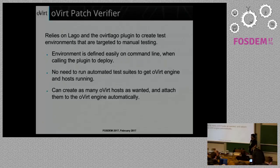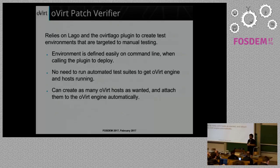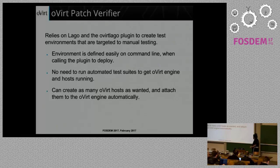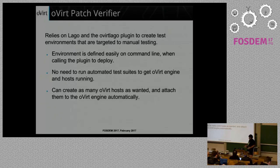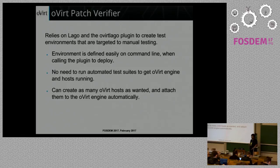To try to solve part of these problems, I created a LAGO plugin called oVirt Patch Verify. It is very simple: it will just create VMs for you based on what you define on the command line. You have a declarative way to say how you want your machines to be created, and it will create them, link them, and get them ready for usage. The good thing is that you don't need to run the full test suite and you can have as many machines as you want. But, like oVirt system tests, it may also have some trade-offs you have to accept.